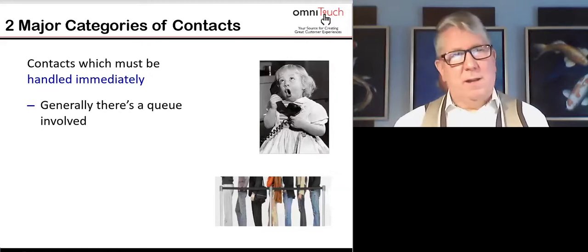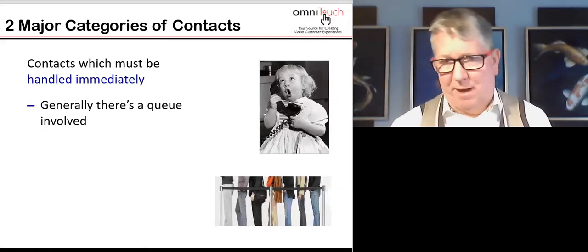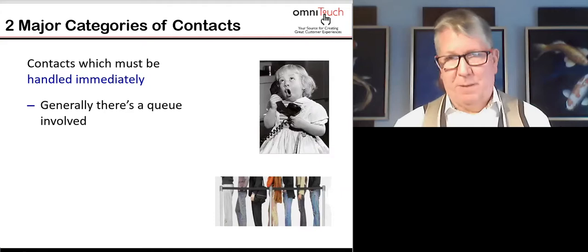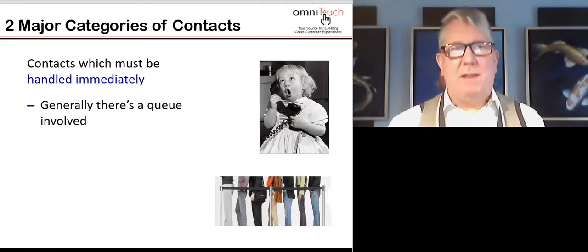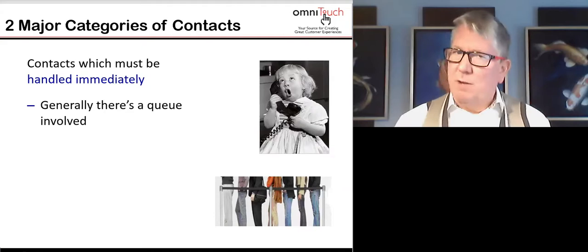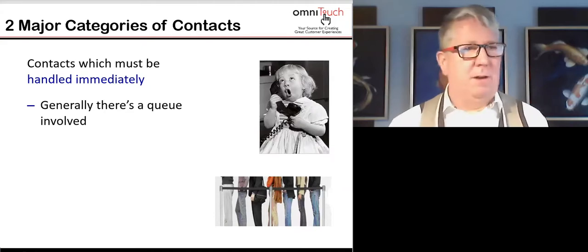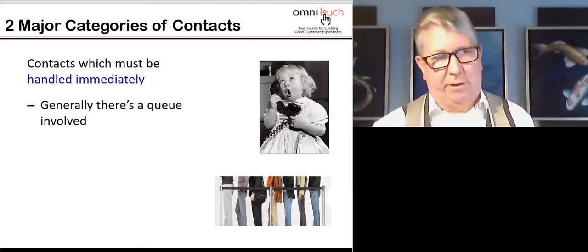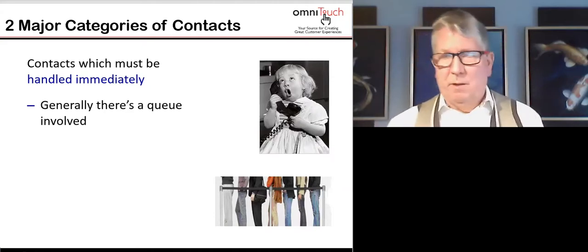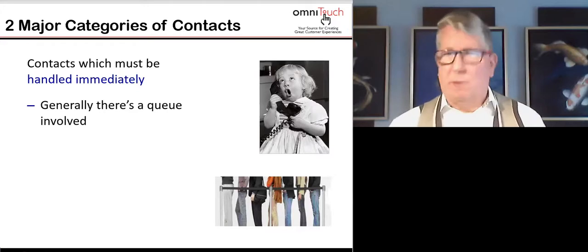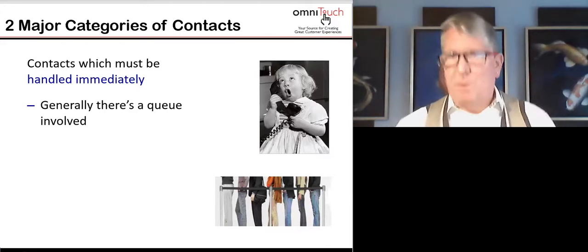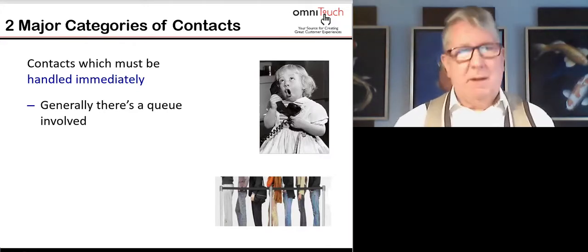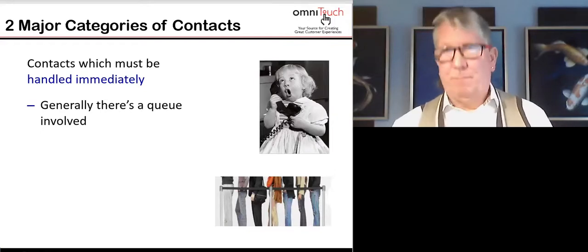When you work in the contact center there are two different categories of contacts coming in. When I talk about categories, I'm not talking about why the customer is contacting you — I'm talking about how they're contacting you, or the channel that they're using. The first category are those that need to be handled when they arrive, immediately, and generally there's a queue involved.